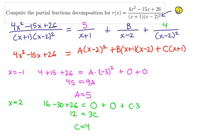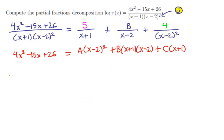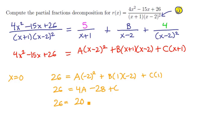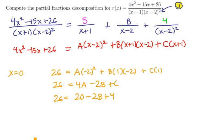So we've selected two values and got two coefficients. For a third x value, x equals 0 is just sort of a random choice. It will give us the equation 26 is equal to a times minus 2 squared, plus b times 1 times minus 2, plus c times 1. Any value would work, but I like to pick small numbers. This gives us 26 is equal to 4a minus 2b plus c. Using the fact that we know a and c, this becomes 26 is equal to 20 minus 2b plus 4. Solving this, we get 2 is equal to negative 2b, and so b is equal to minus 1.